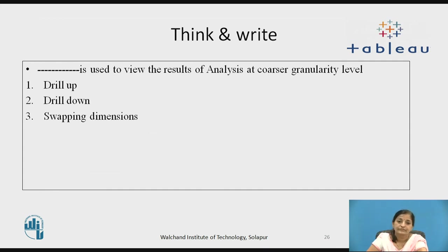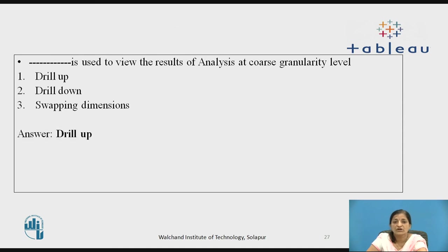Let's pause the video for a while. Think and write: what is used to view the results of analysis at a coarser granularity level — is it drill up, drill down, or swapping dimensions? As per our earlier discussion, drill up is used to view the results of analysis at a coarser granularity level. If your results are already showing the analysis for a month, then using the drill up option we can show the analysis for every quarter, half year, or yearly. That is, you are viewing the analysis at a higher level in the hierarchy, which is called a coarser granularity level.